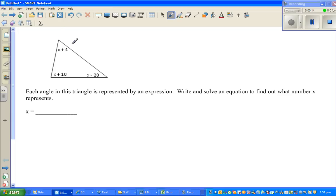So you've got x plus 4. Let me name this triangle ABC. I can say angle A measures x plus 4, angle B measures x plus 10, and angle C is x minus 20.